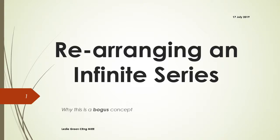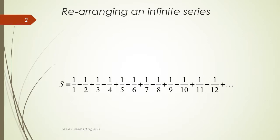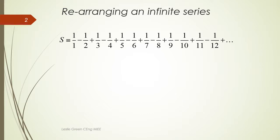Rearranging an infinite series and why this is a bogus concept. First we start with an infinite series S. The three bar equal sign means identically equal to or defined by. The three dots at the end mean there are more terms following the same pattern and continuing without limit.